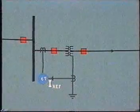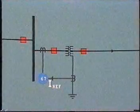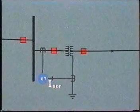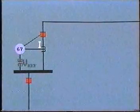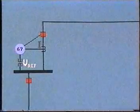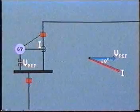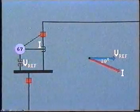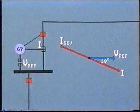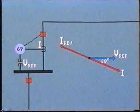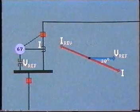For example, if current is used as the polarizing quantity, it can be obtained from a CT located in the grounded neutral of a Y-connected transformer. In this simple arrangement, the directional element receives reference voltage from the VT on the bus, and current is measured by the CT in the protected line. In normal operation, the phase angle of the current may be up to, say, 20 degrees lag. But if the direction of current flow reverses, the phase angle will change by 180 degrees. This very large difference is easy for the relay to detect and activate the directional element.